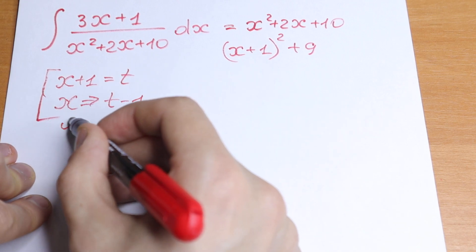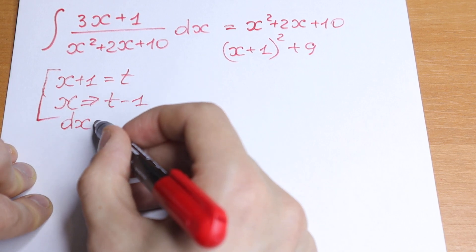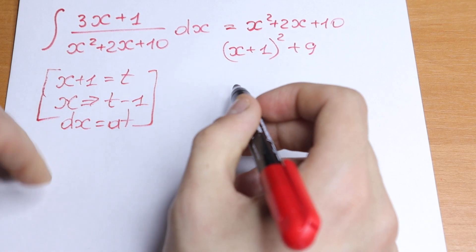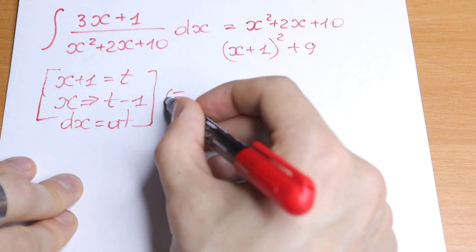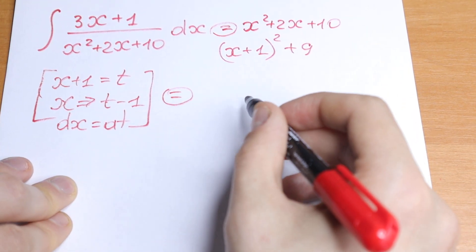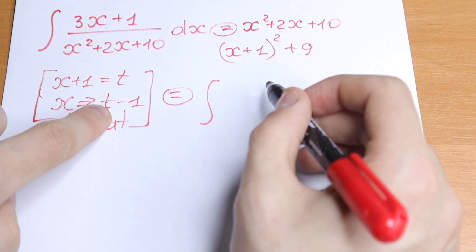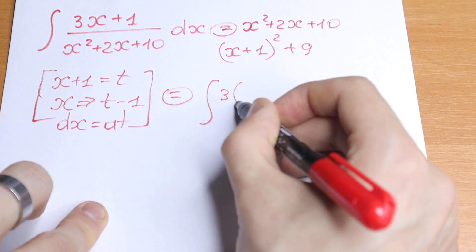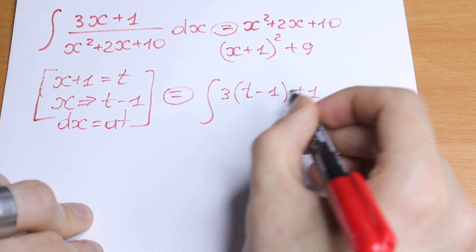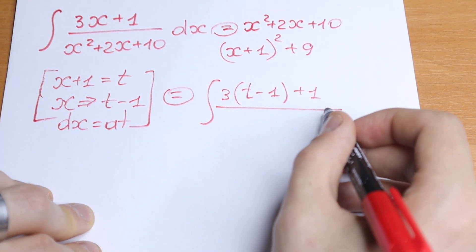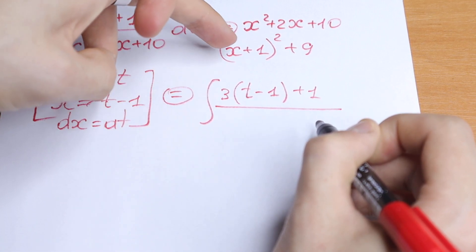And dx equals dt, because when we find the derivative the constant vanishes, so dx = dt. Now let's put all of these elements into our integral. We will have the integral of 3 times (t minus 1) plus 1 in the numerator — since x equals t minus 1 — all divided by t squared plus 9, because x plus 1 equals t.